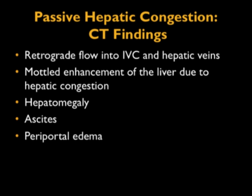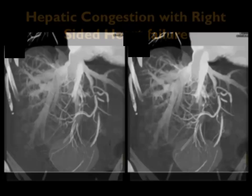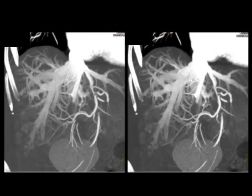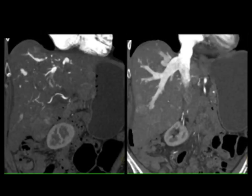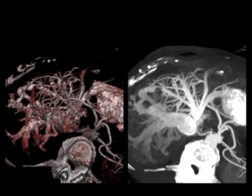You can see a mottled enhancement pattern due to congestion, hepatomegaly, ascites, and periportal edema. Here's a beautiful example — look at the right side of the heart and look at the impressive reflux down the IVC and the hepatic veins, very nicely seen on various images and on 3D mapping. There's no other way to get that visualization of the veins than reflux down the IVC. A very classic case of cardiac cirrhosis and changes related to poor cardiac function.